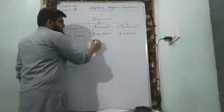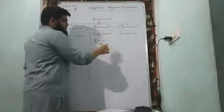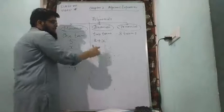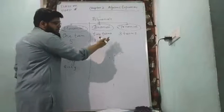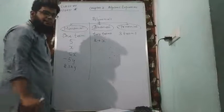Binomials are two terms. Example: 2 plus x. 2 is one term, x is another term, and there is a plus sign in between. So this is one term, x is another term. That's an example of binomial.